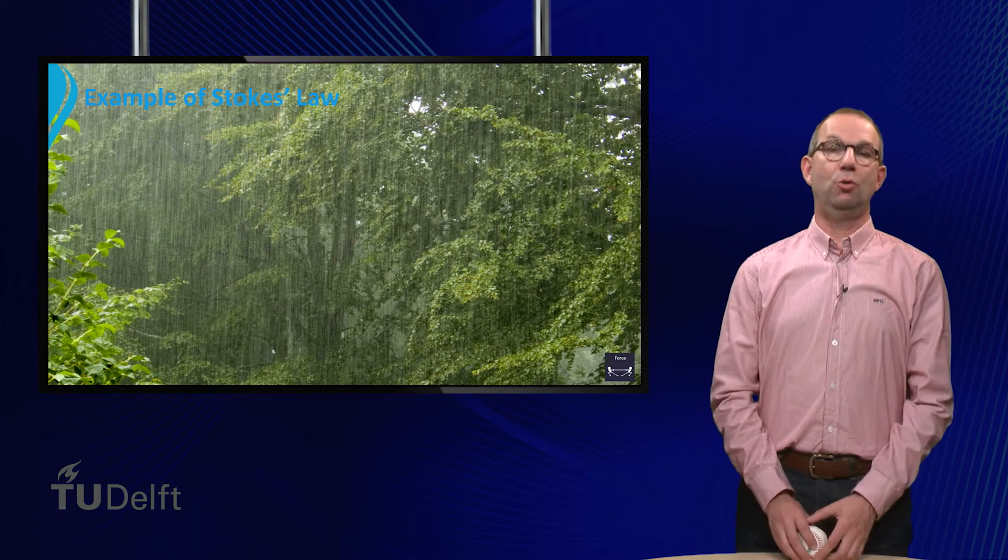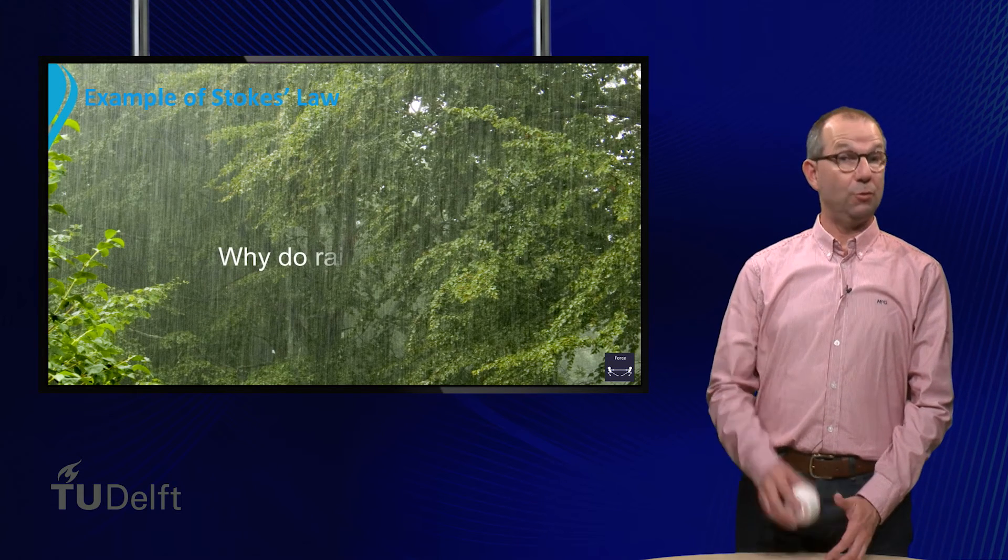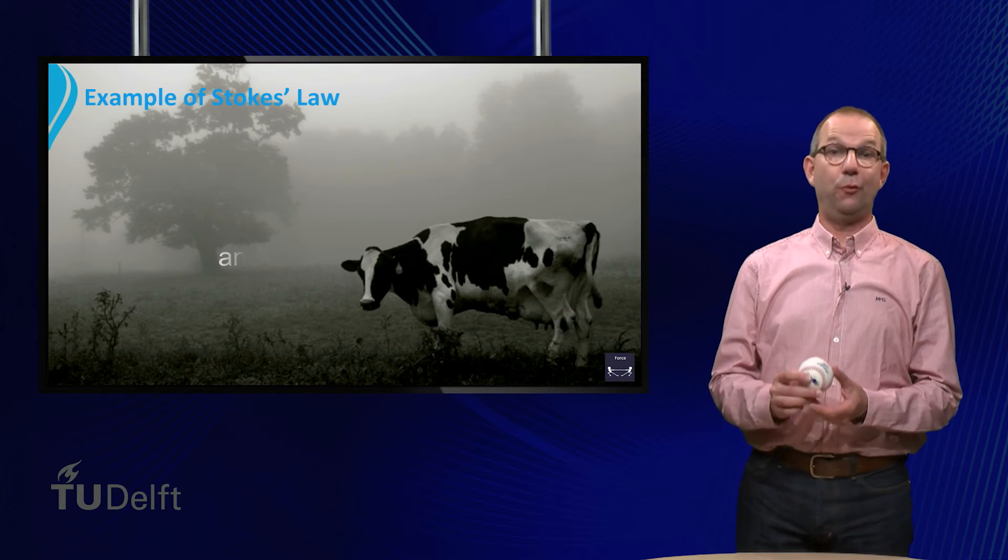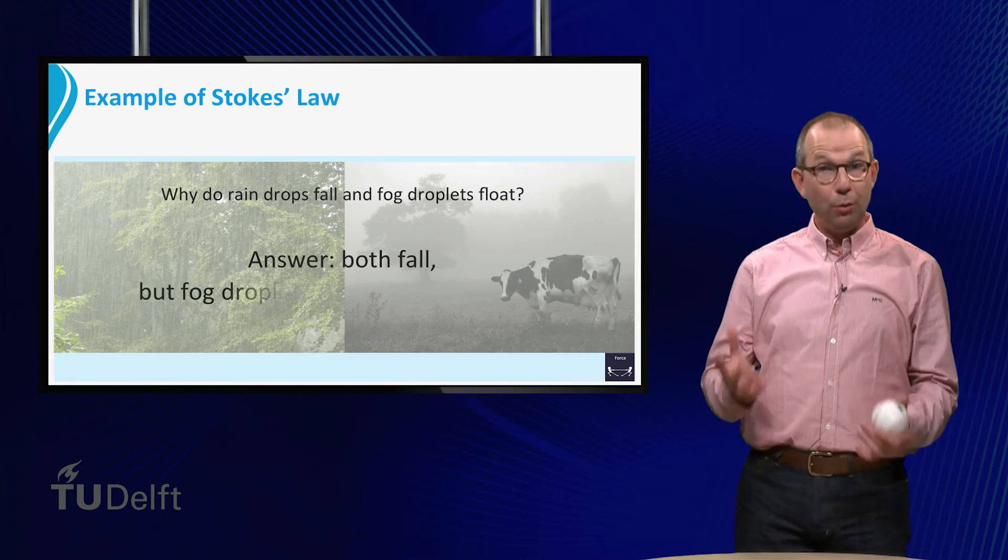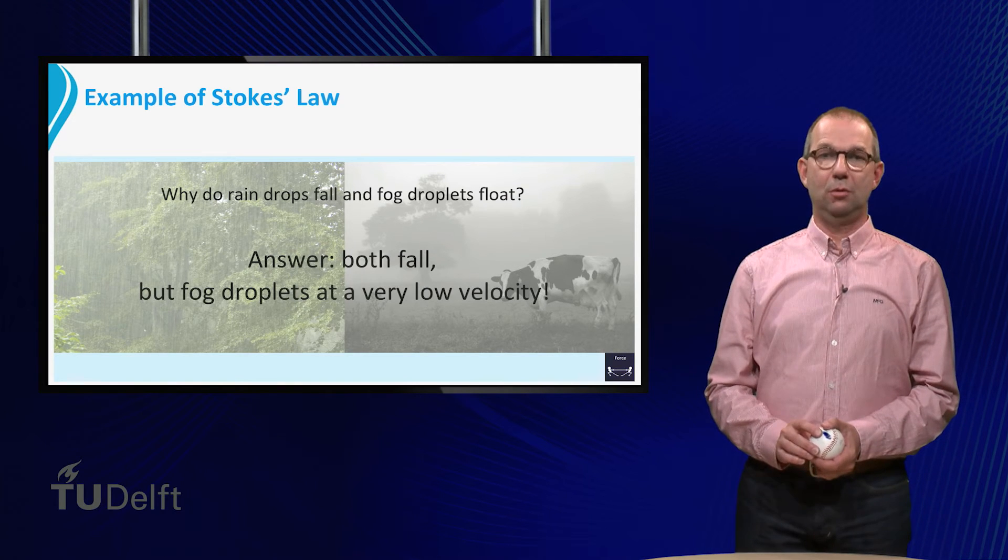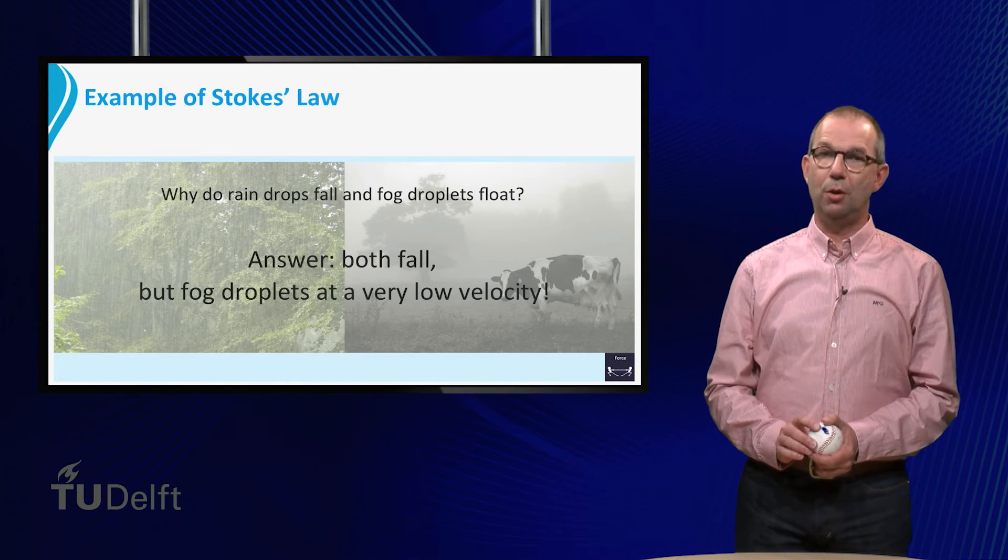Let's do an example using Stokes law. Why do raindrops fall and fog droplets float? The answer to this question is both fall, but the fog droplet with a rather low velocity.